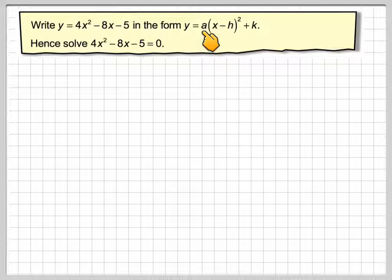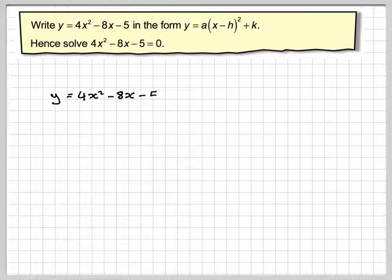To put this into this format, you have to complete the square. So first of all, write down the function y equals 4x squared minus 8x minus 5. Now, unfortunately, a is not equal to 1, it's equal to 4.